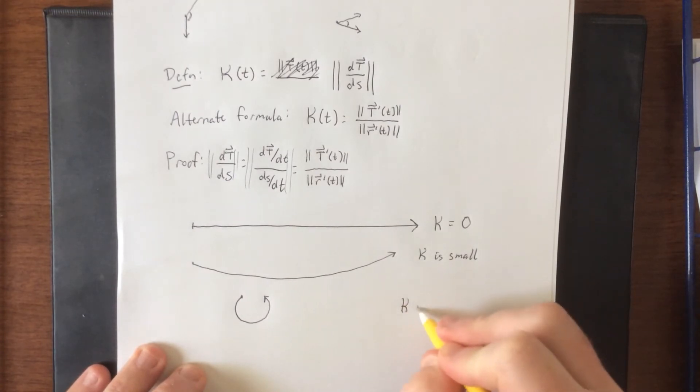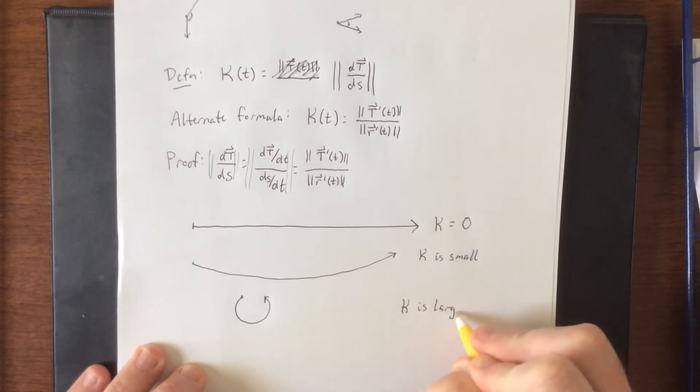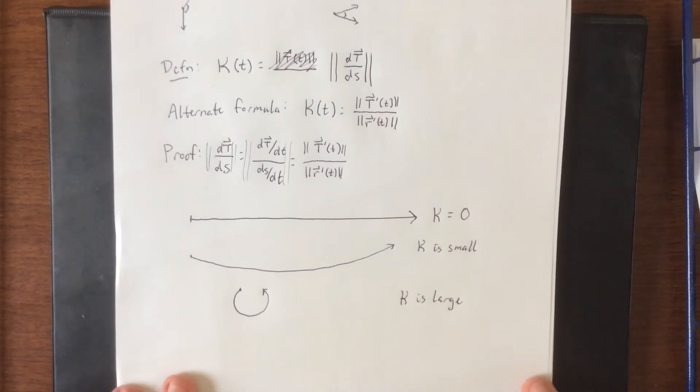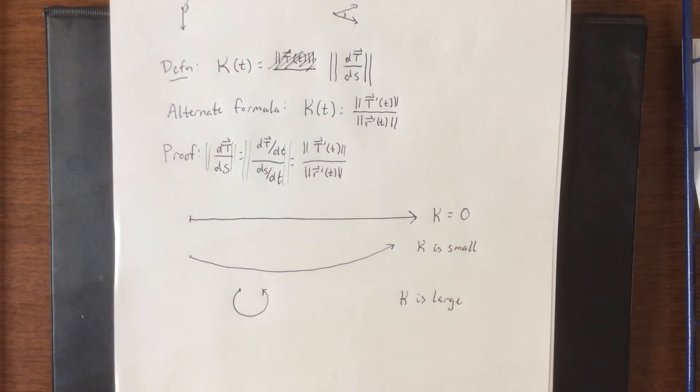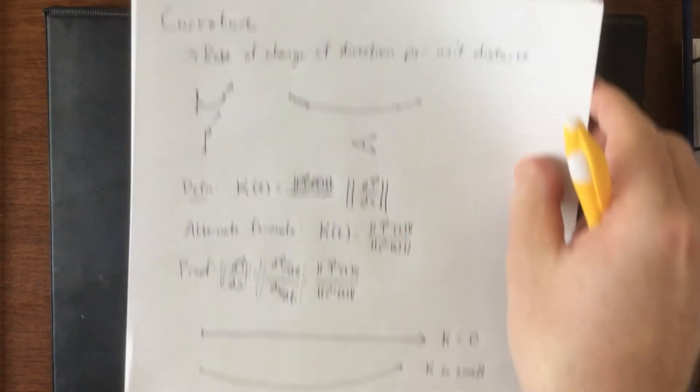To describe this in terms of a physical sense, curvature is essentially how much you are displacing or turning your steering wheel. If you turn it just a little bit, you'll have a very small curvature. But if you turn it a lot, you'll have a very large curvature. Small curvature means large circle and large curvature means small circle. And that actually takes us to a theorem.